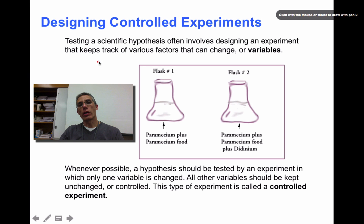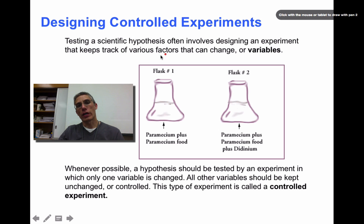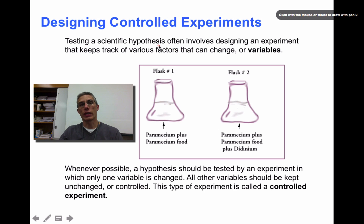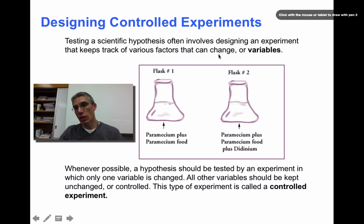Once we have created a well-thought-out hypothesis, our next job is to create what we would consider a controlled experiment. Testing a scientific hypothesis often involves designing an experiment — something we've done many times in other science classes — that keeps track of various factors that could possibly change. We call those factors variables.